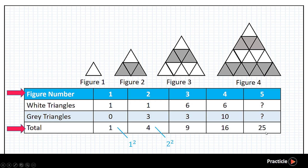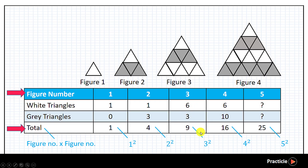And how are the square numbers related to the figure number? We can see that in order to get the total number of triangles in any figure, what we need to do is to square the figure number — in other words, to multiply the figure number by the figure number. So instead of drawing each figure one by one, we have discovered a shortcut. Well done!